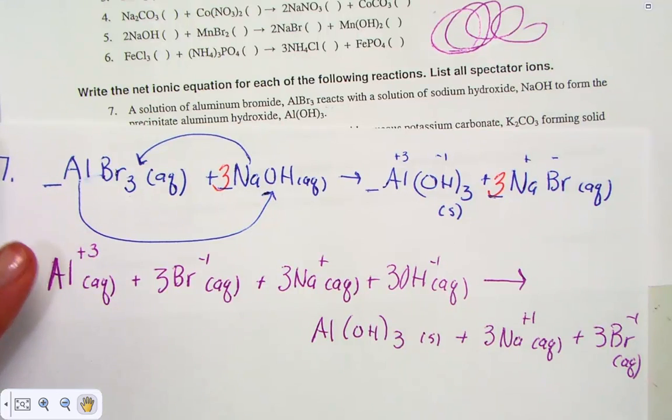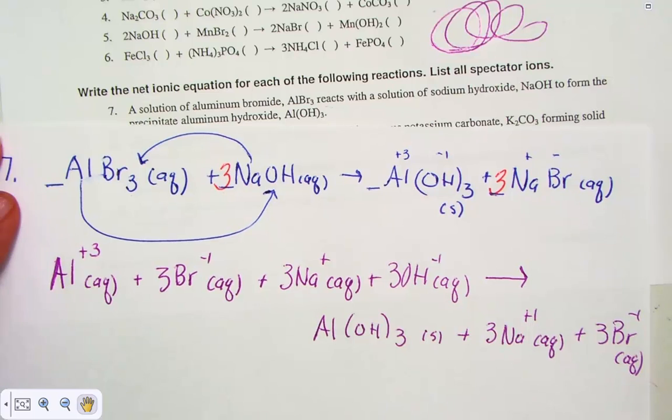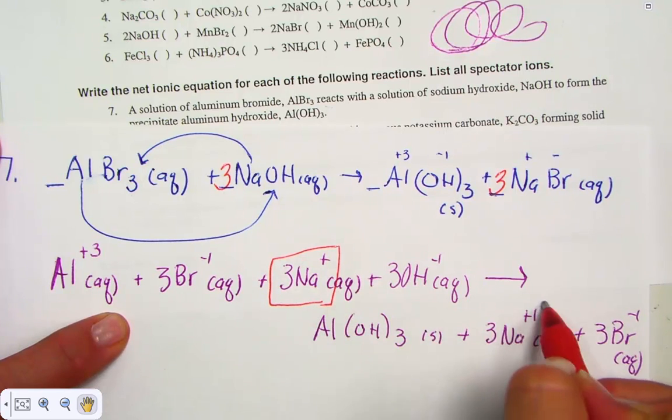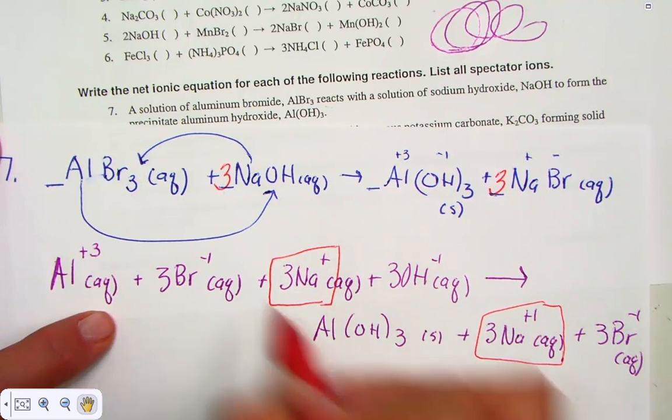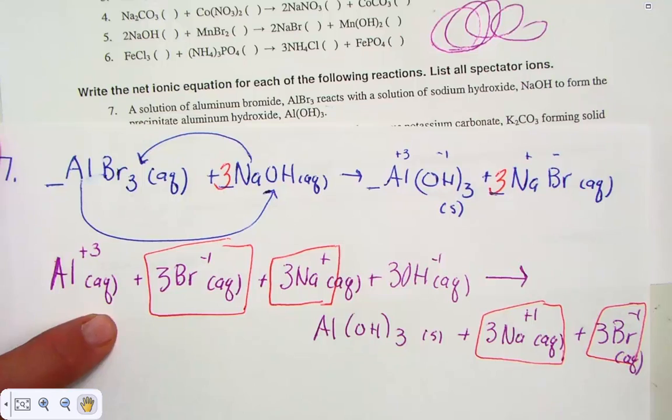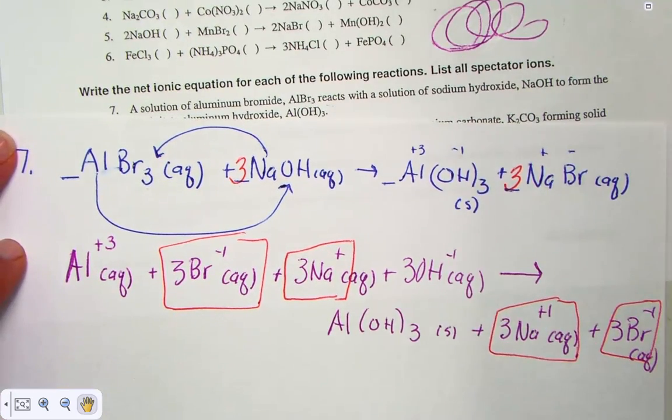We were asked to recognize the spectator ions, and I'll do that with simply highlighting or circling. I noticed that three sodium ions remain unchanged, and the bromide ions remain unchanged. Those are my spectator ions.